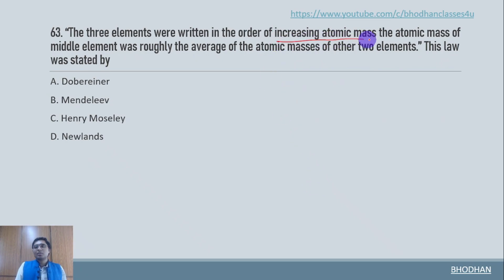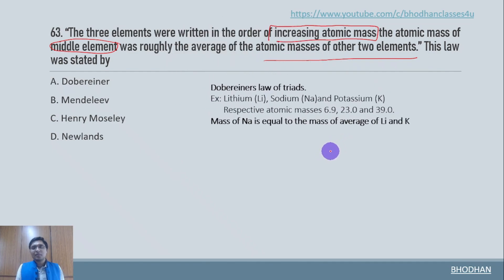Three elements were written in increasing order of the atomic mass. And the atomic mass of the middle element was roughly average of atomic mass of other two elements. So this is a law straight away you can go to option A. Why? Because according to Dobereiner, let's take one example. Here we have lithium, sodium and potassium. So their atomic masses are 6.9, 23.0, 39 respectively. So if you take average of 6.9 and 39 then we will get near about 23. So which means this is what the Dobereiner is going to explain to all of us.